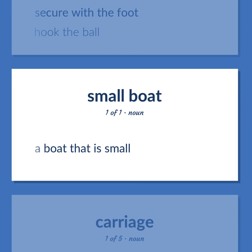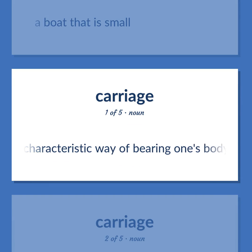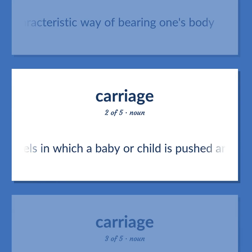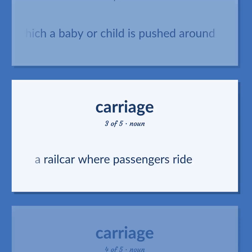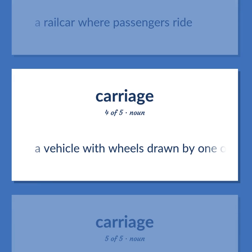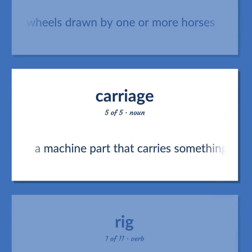Gig: A boat that is small. Carriage: Characteristic way of bearing one's body. A small vehicle with four wheels in which a baby or child is pushed around. A railcar where passengers ride. A vehicle with wheels drawn by one or more horses. A machine part that carries something else.